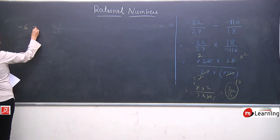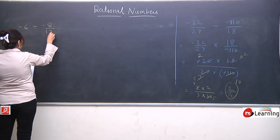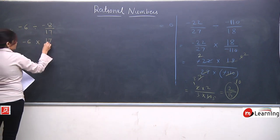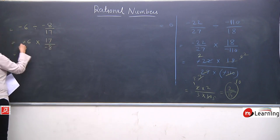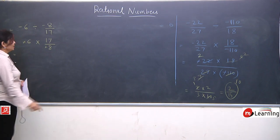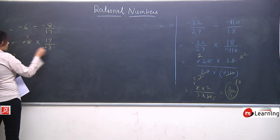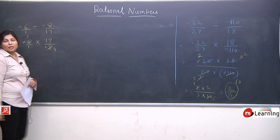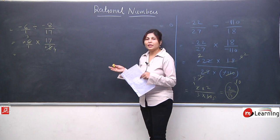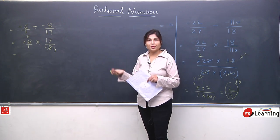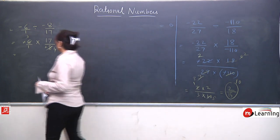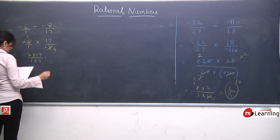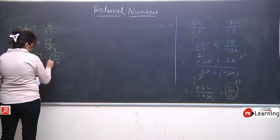Another one: -6 divided by -8/17. Since -6 has no denominator, put 1 below it: -6/1. Minus and minus cancel. Now -6/1 multiplied by 17/8. Two threes are 6 and two fours are 8 — cancel by 2. Numerator: 3 × 17 = 51. Denominator: 1 × 4 = 4. Answer is 51/4.